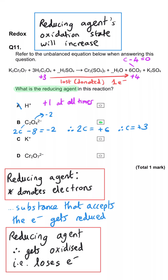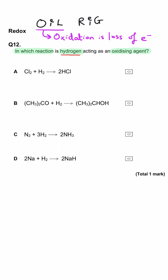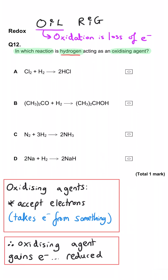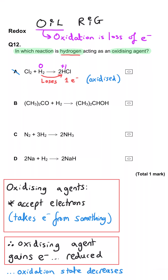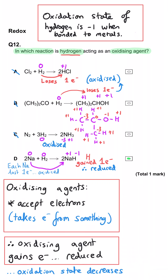In which reaction is hydrogen acting as an oxidizing agent? Oxidizing agents cause another species to lose electrons, so the oxidizing agent gains electrons and is itself reduced. In A, B, and C, hydrogen starts at zero and goes to plus 1 — it's been oxidized, making it the reducing agent each time. In D, hydrogen starts at zero and in the product it's bonded to sodium; sodium is plus 1, so hydrogen is minus 1. Hydrogen has gained electrons from sodium, oxidizing the sodium — so D is correct.